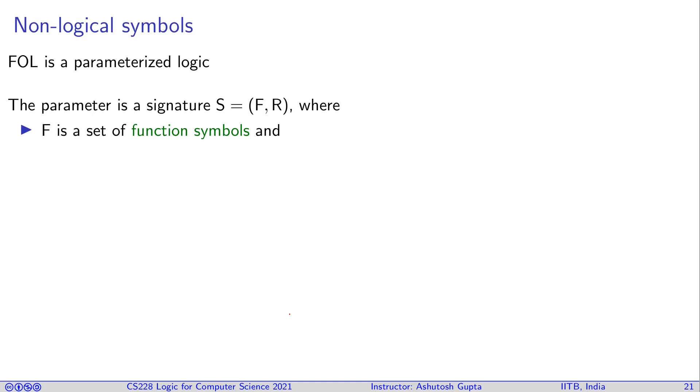Each symbol is associated with an arity, which basically says that these function symbols or predicate symbols take these many parameters. We will write f/n means this function takes n parameters, or p/k means this relational symbol takes k parameters.